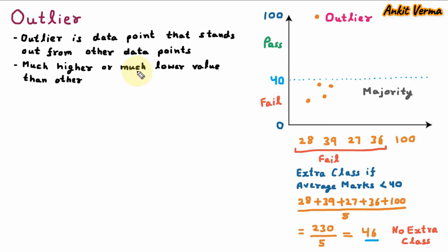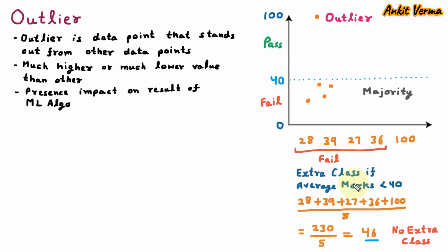Outlier presents impact on the result of machine learning algorithm. Here, if we are designing an algorithm that is giving extra class if average marks are less than 40, four students are having marks less than 40, so the result must be the extra class. But because of the presence of outlier, there is impact on result, and because of it the average is going up and there is no extra class.